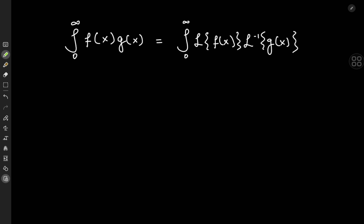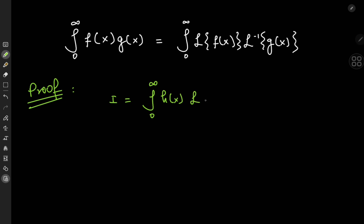This seems like a really cool trick, but of course we need to look for a proof first. The proof starts off with this auxiliary integral I, defined as the integral from 0 to infinity of h(x) times the Laplace transform of g treated as a function of x dx. It is assumed that all the integrals in question converge.